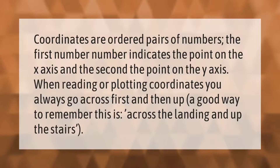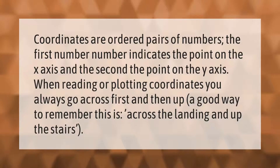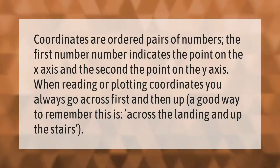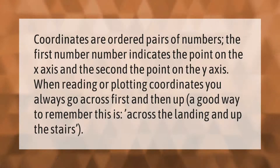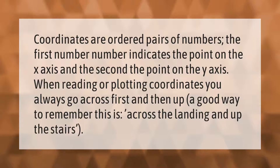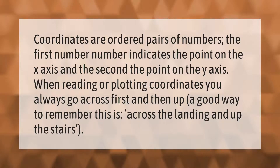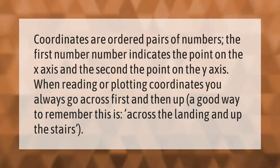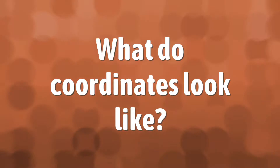Coordinates are ordered pairs of numbers. The first number indicates the point on the x-axis and the second the point on the y-axis. When reading or plotting coordinates, you always go across first and then up. A good way to remember this is: across the landing and up the stairs.